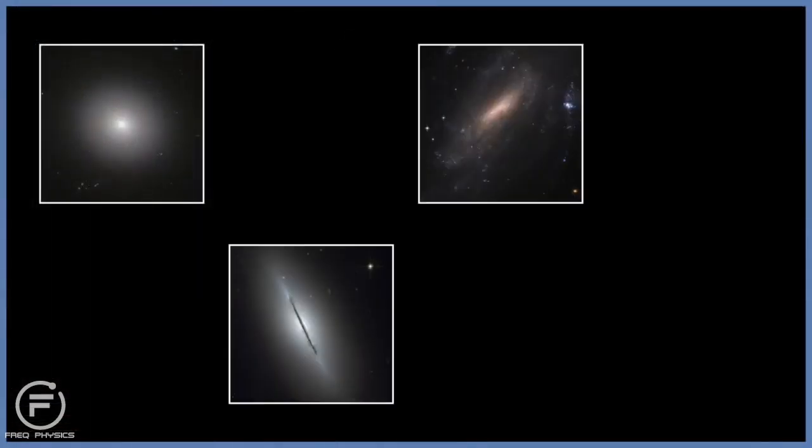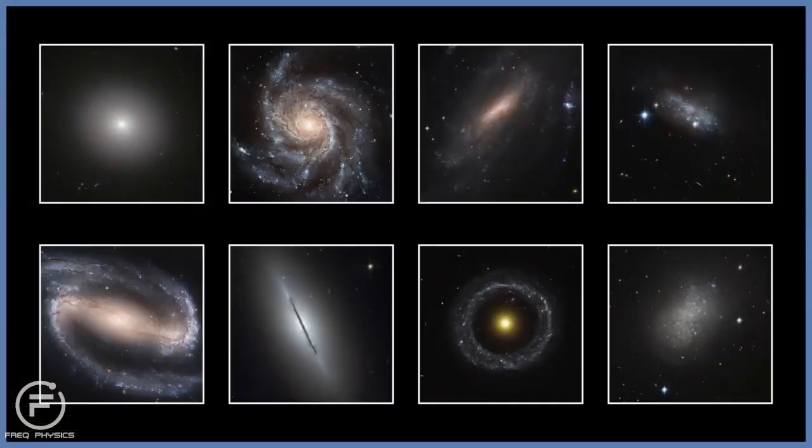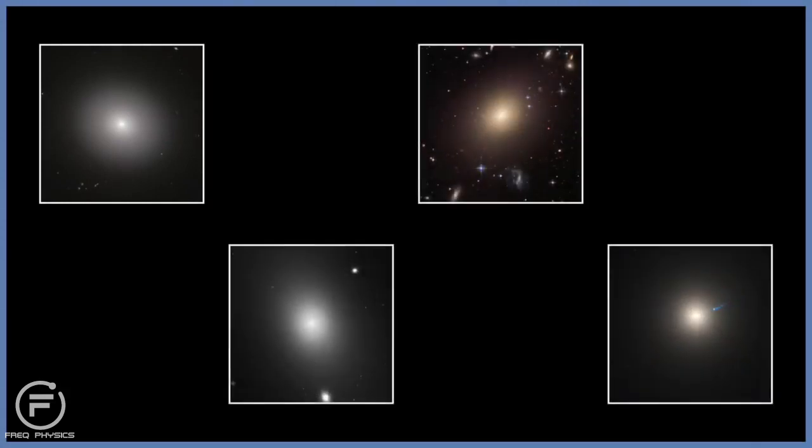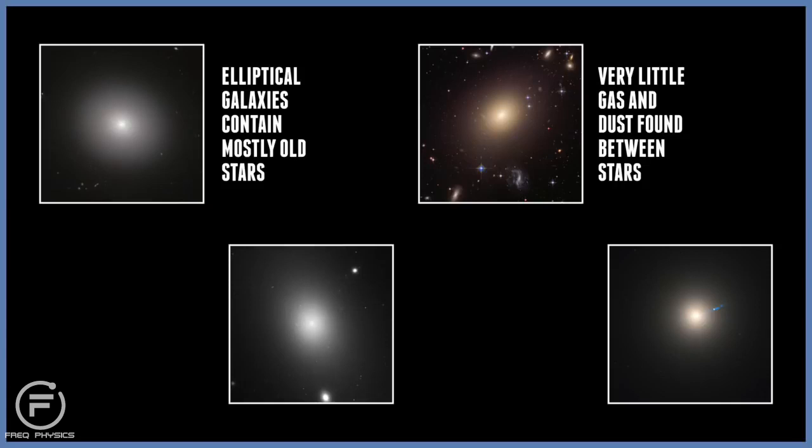The Hubble classification is based solely on how a galaxy looks. This classification is still used today because there is a correlation between the physical differences and the different types of galaxies. Elliptical galaxies contain many old stars and have very little gas and dust found between these stars. From our understanding, new stars seem to form from clouds of interstellar gas and dust. Elliptical galaxies lack these raw ingredients to make new stars, so elliptical galaxies can be defined as a sort of dying galaxy.